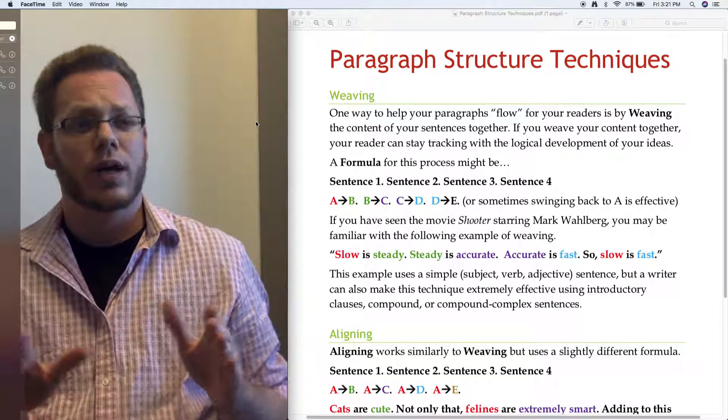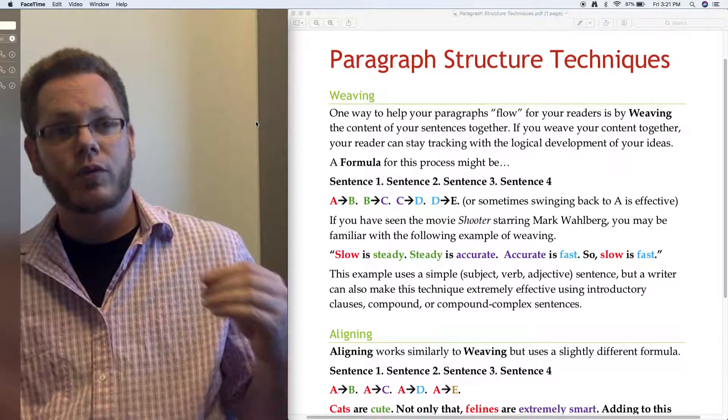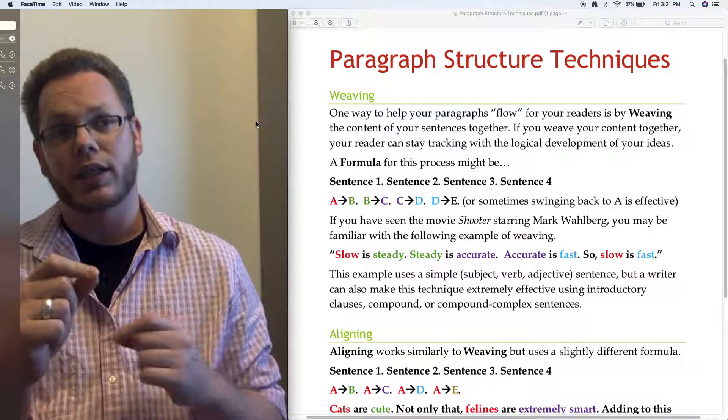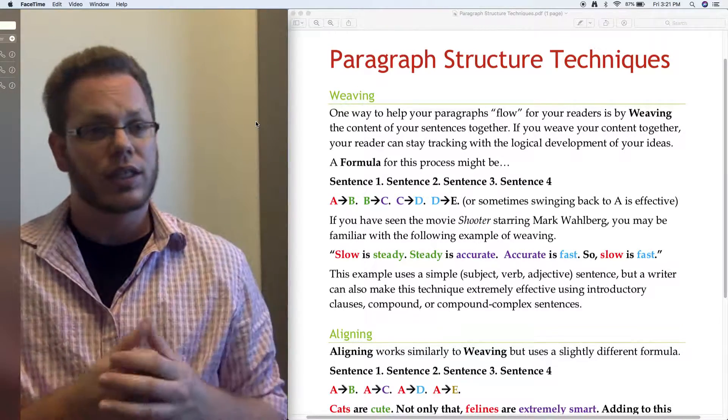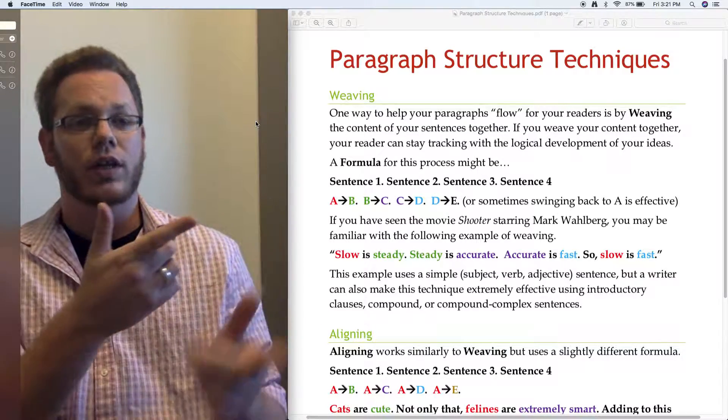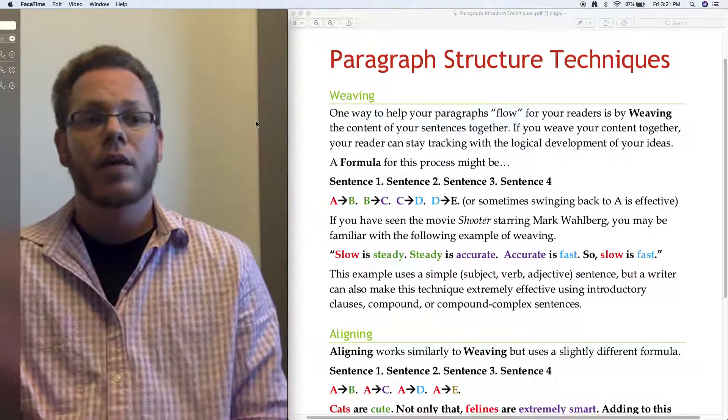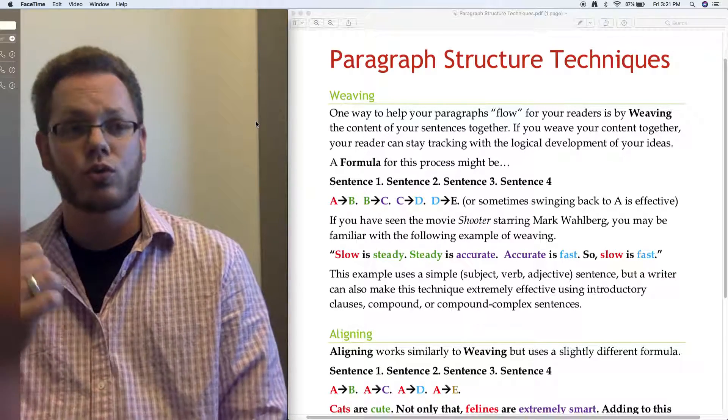One way to help your paragraphs flow for your readers is by weaving the content of your sentences together. If you weave your content together, your reader can stay tracking with the logical development of your ideas. If you need a formula, imagine you've got a sequence of sentences one, two, three, four. If you've seen the movie Shooter starring Mark Wahlberg, the old school one,